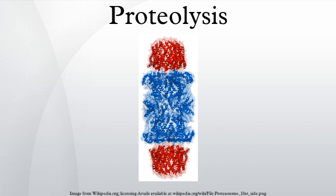Strong mineral acids can readily hydrolyze the peptide bonds in a protein. However, some proteins are remarkably resistant to hydrolysis. One well-known example is ribonuclease A, and one method for its purification involves treatment of crude extracts with hot sulfuric acid so that other proteins become degraded while ribonuclease A is left intact.